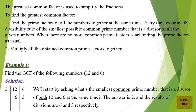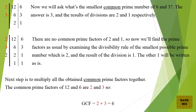Example 1: Find the GCF of 12 and 6. We'll start by asking: what's the smallest common prime number that is a divisor of both 12 and 6 at the same time? The answer is 2, and the results of divisions are 6 and 3 respectively. Now, what's the smallest common prime number of 6 and 3? The answer is 3, and the results of divisions are 2 and 1 respectively.